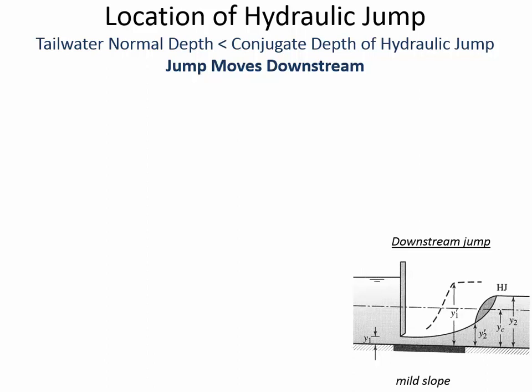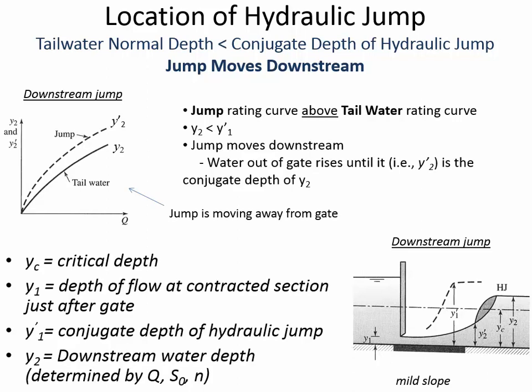You should read the book before Thursday just to help reinforce this. We'll see this in the lab, and the nice thing is I can control where the jump is. There's a little wheel on the upstream end of the flume, and I can raise and lower the flume. When I raise the flume, I'm making the channel more steep, and when I make the channel steep, the normal depth gets smaller and smaller, which causes the jump to run — when the jump has to get further away from the gate.